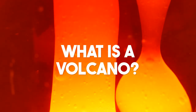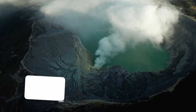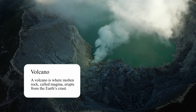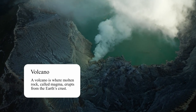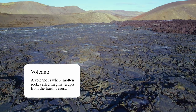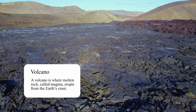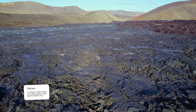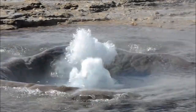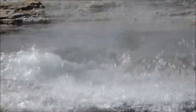What is a volcano? A volcano is where molten rock called magma erupts from the Earth's crust. As it rises, it cools and hardens into rock. Volcanoes can form both on land and underwater.